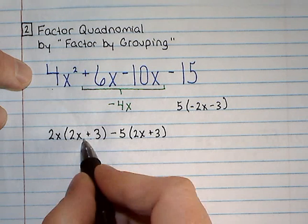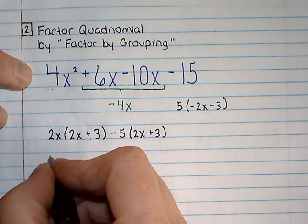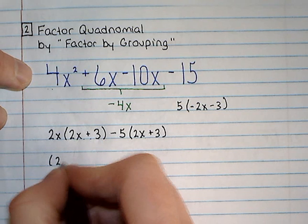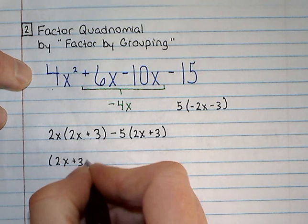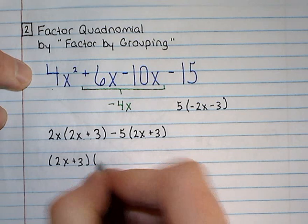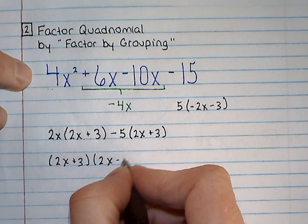These binomials are the same, so I'm going to factor those out. 2x plus 3. And then I'm left with my remainder, 2x minus 5.